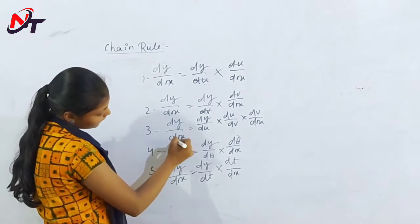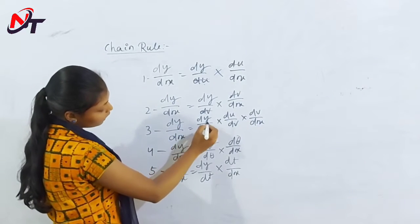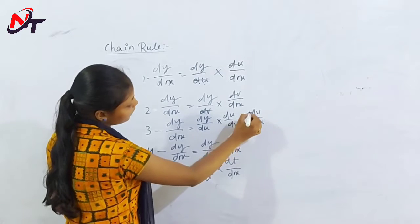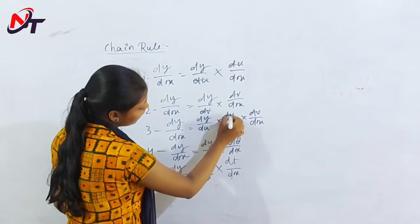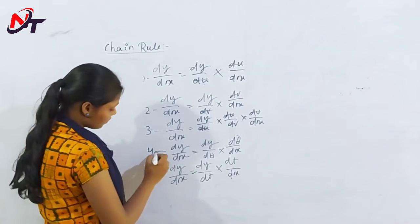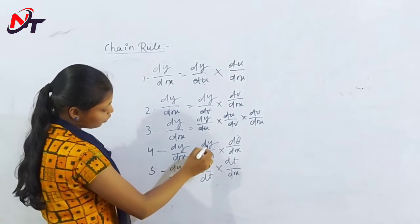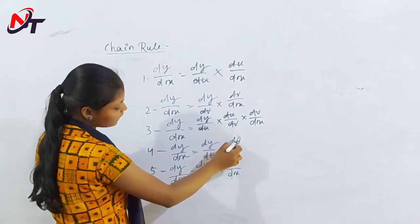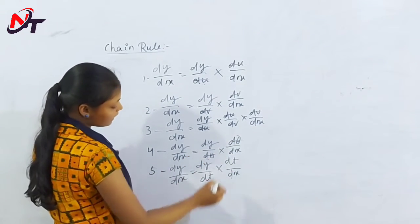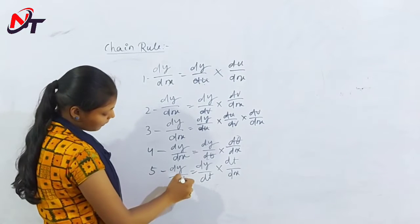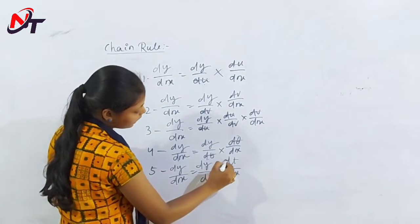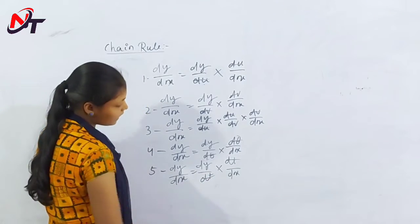Second recommendation: dy/dx is equal to dy/du, du cancels, giving dy/dx. For the equation, dy/dx is equal to dy/dθ into dθ/dx; dθ and dθ cancel, giving dy/dx. Further, dy/dx is equal to dy/dt into dt/dx; dt cancels, giving dy/dx.